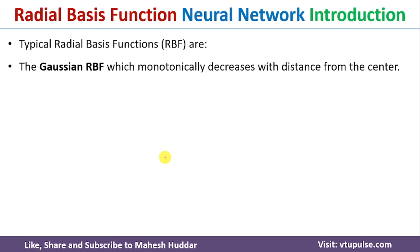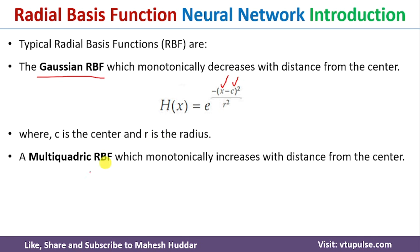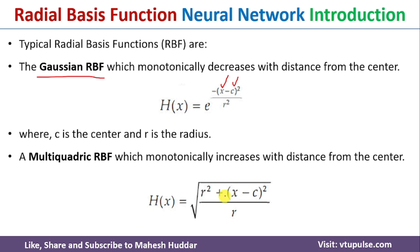There are different types of radial basis function in artificial neural network. The first and most popular is the Gaussian radial basis function, which is: h(x) = e raised to minus (x minus c) squared divided by r squared, where x is the input, c is the center, and r is the radius. Similarly, there is the multi-quadratic radial basis function, given by: h(x) = square root of (r squared plus (x minus c) squared) divided by r, where r is the radius, x is the input, and c is the center.